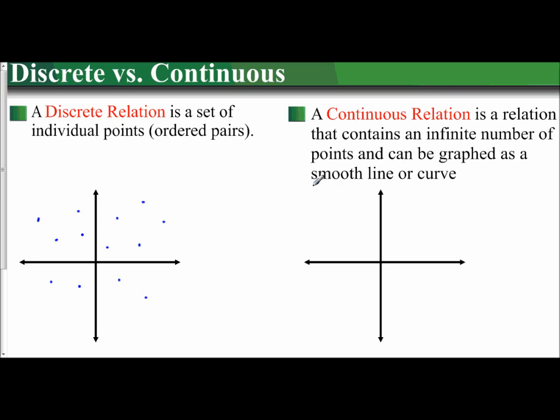I think that's your hint there - a continuous relation can be graphed as a line or a curve. An example of a continuous relation would be if I were to draw a line, because remember a line has arrows on the end of it. There is no beginning, there is no end. It extends on forever. There's an infinite amount of points on that line.